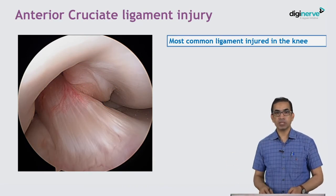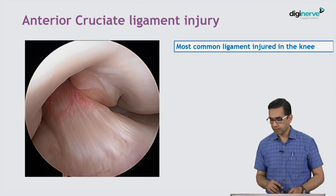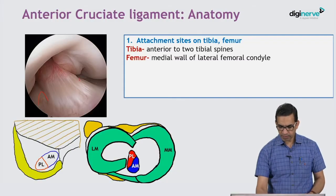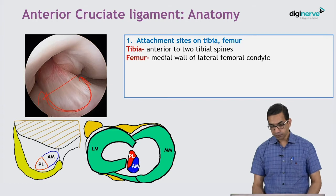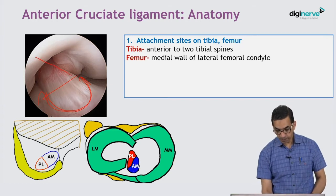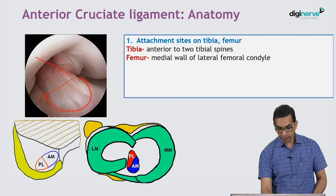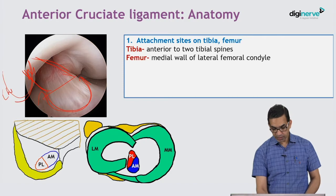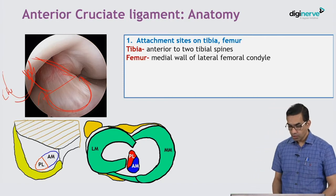As a quick revision: on the tibia, the ACL is attached between the lateral tibial spine and medial tibial spine. As it moves up, it attaches onto the medial wall of the lateral femoral condyle — so this is the lateral femoral condyle, this is the medial wall, this is the lateral wall. The ACL is attached to the medial wall of the lateral femoral condyle.